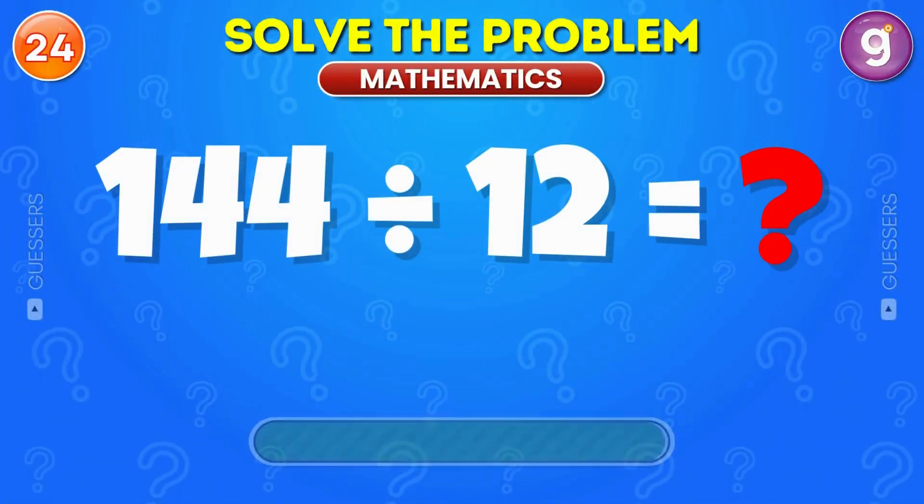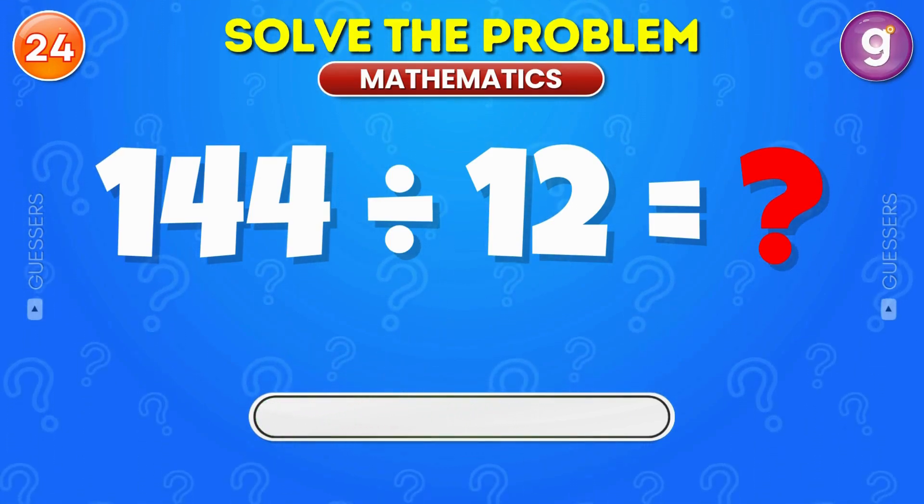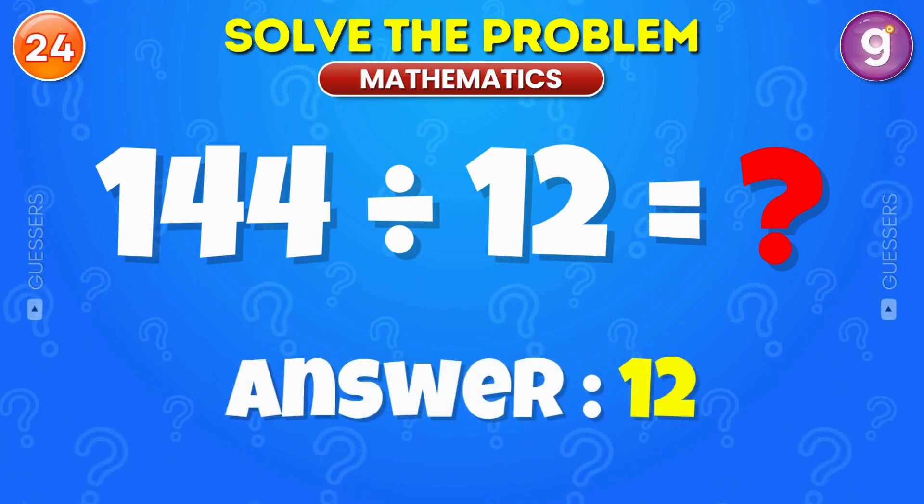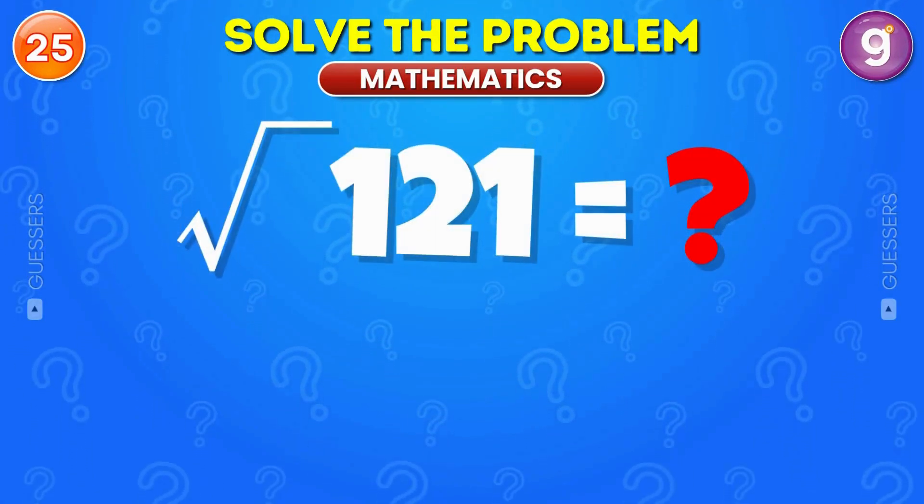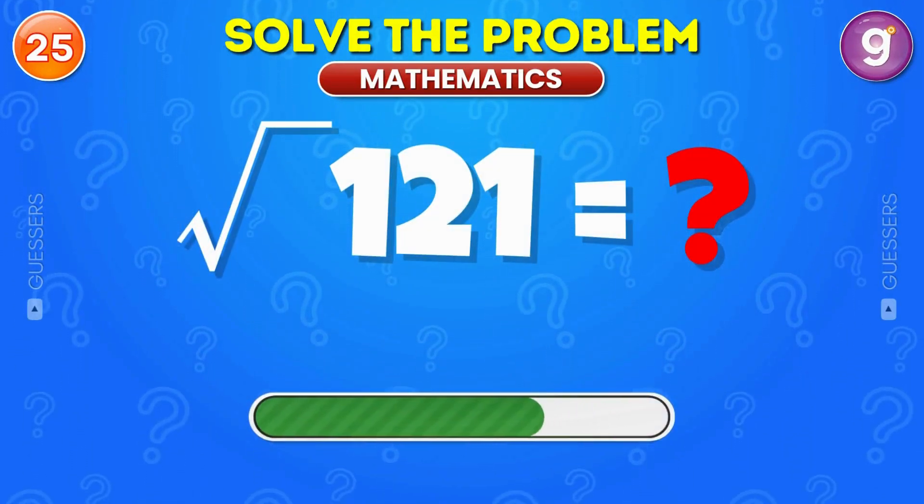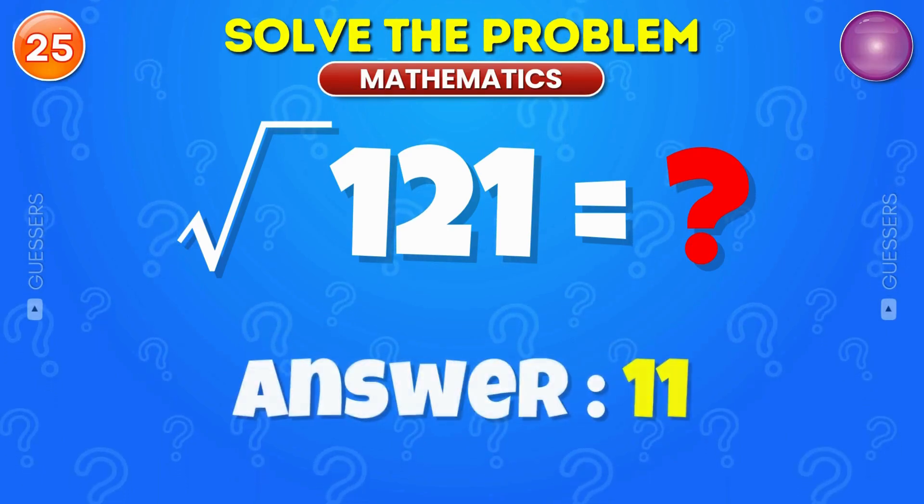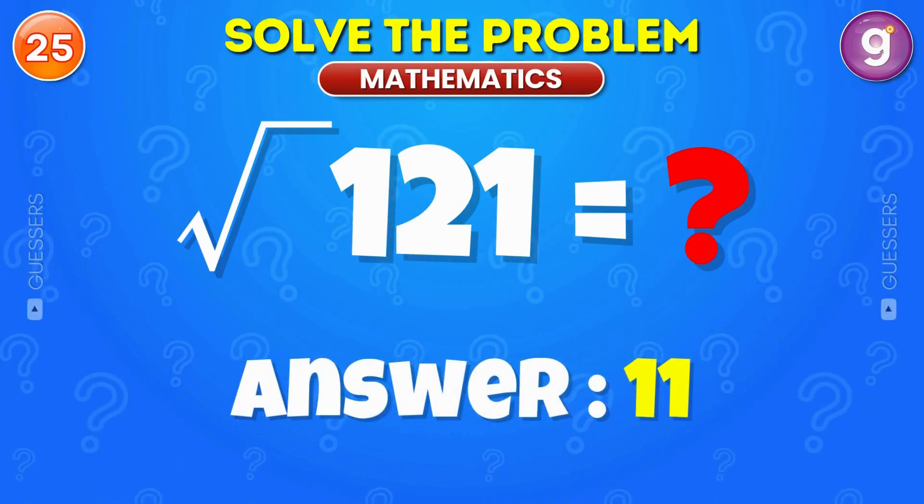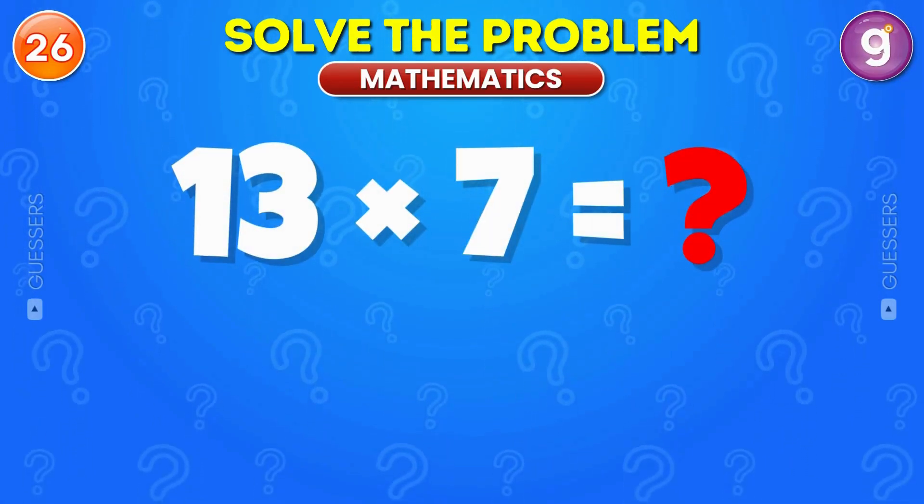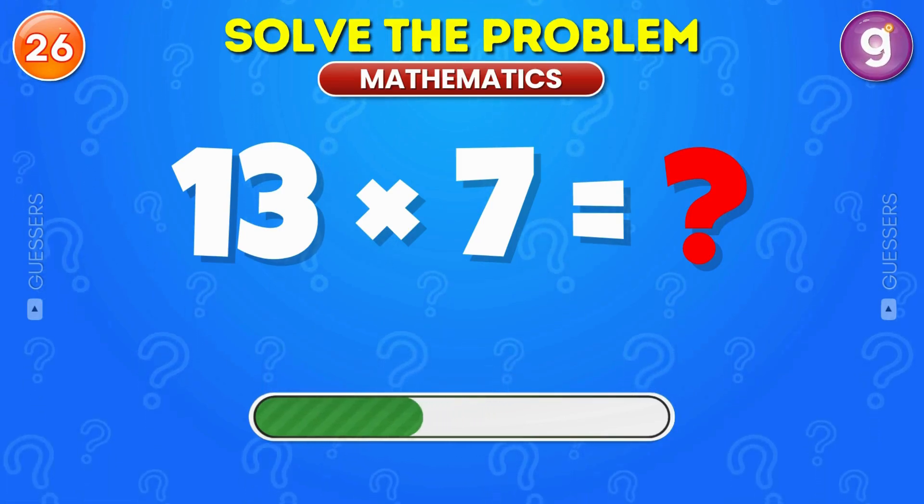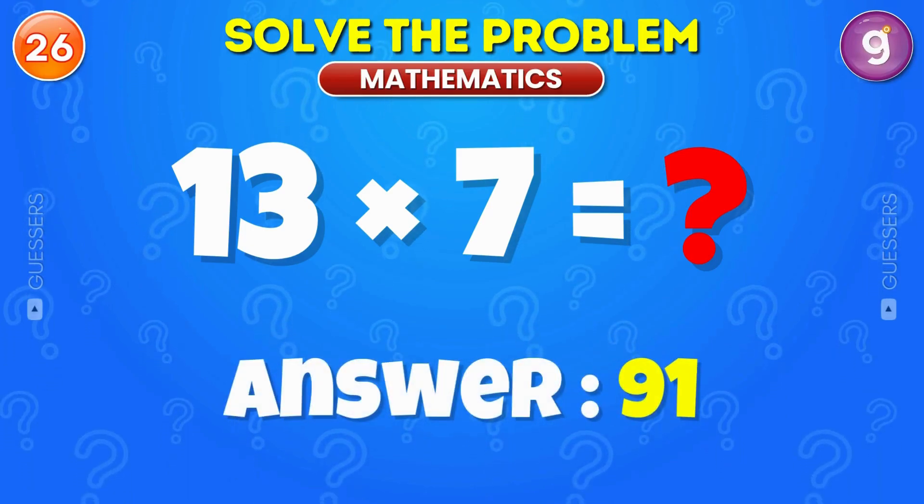Divide 144 by 12. The answer is 12. What is the square root of 121? It's 11. Multiply 13 by 7. The answer is 91.